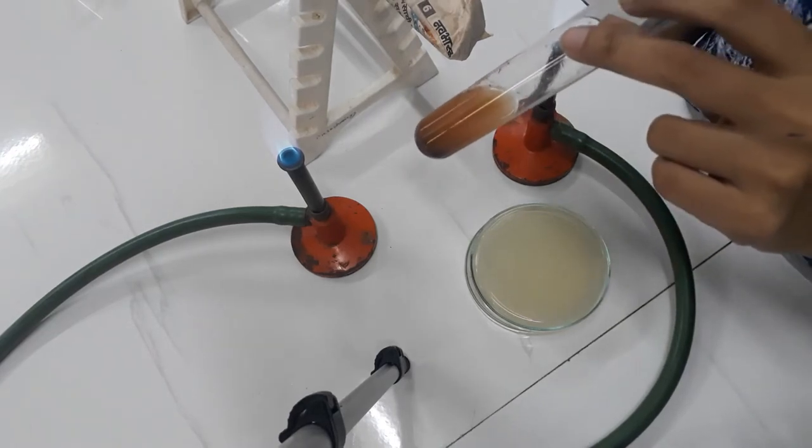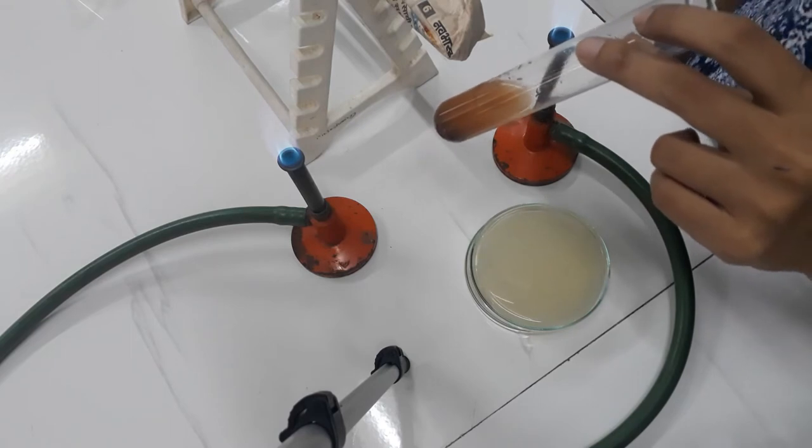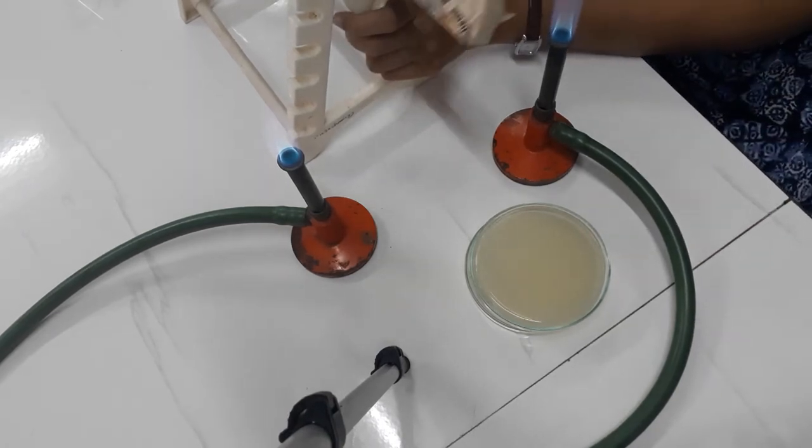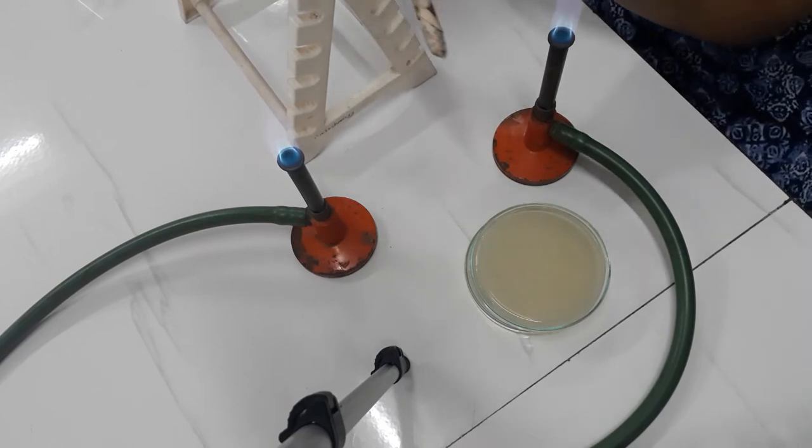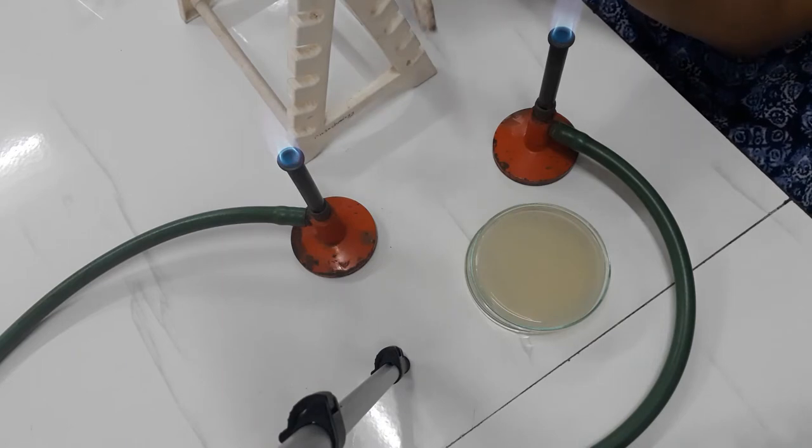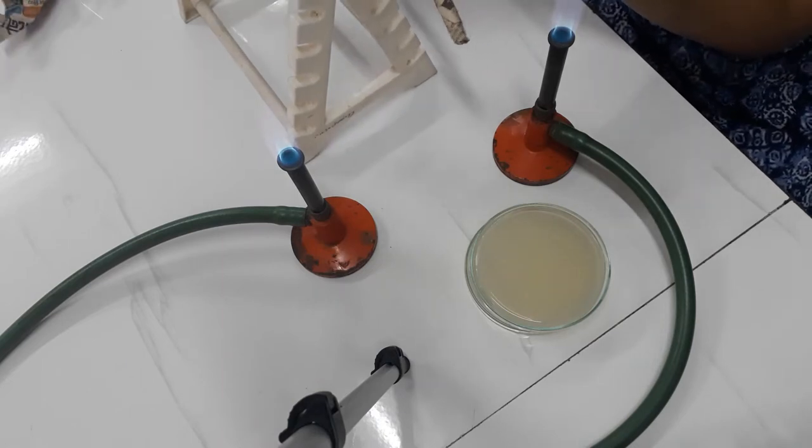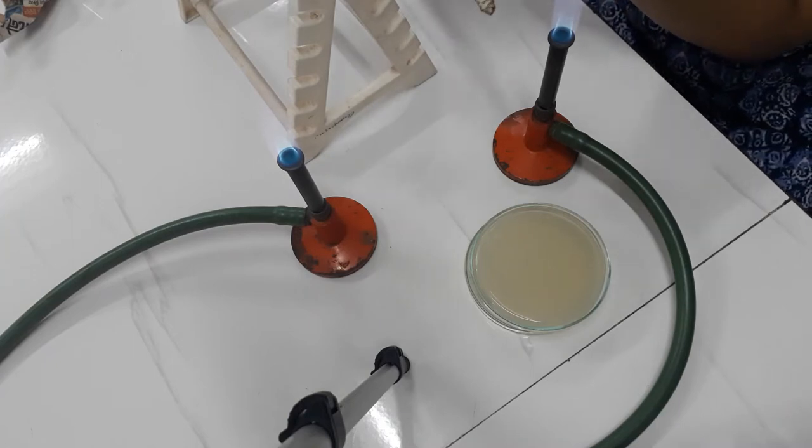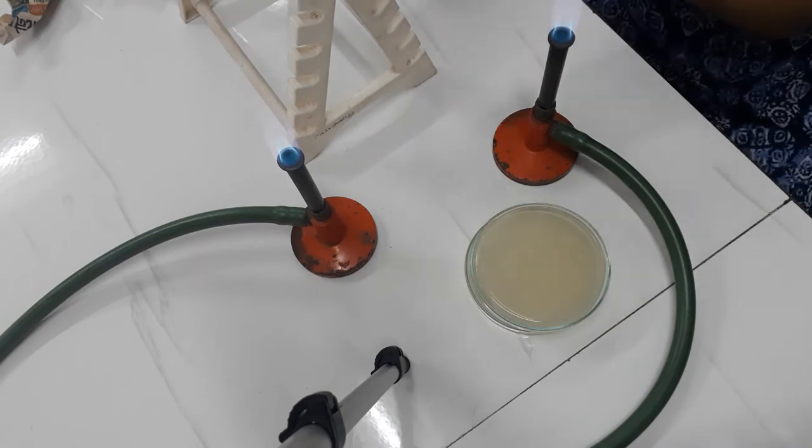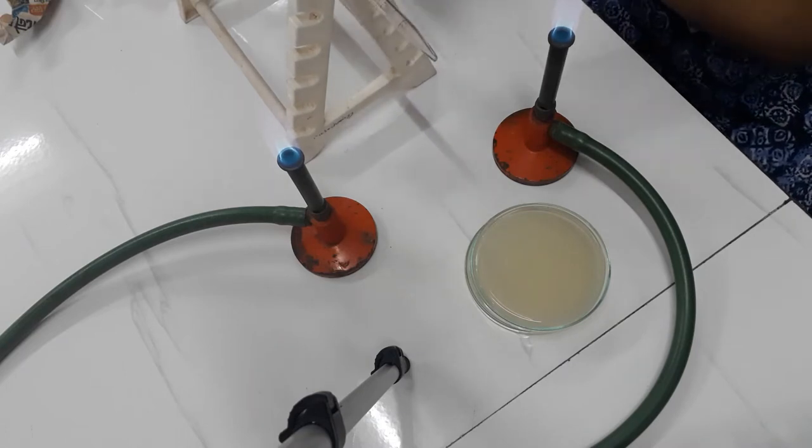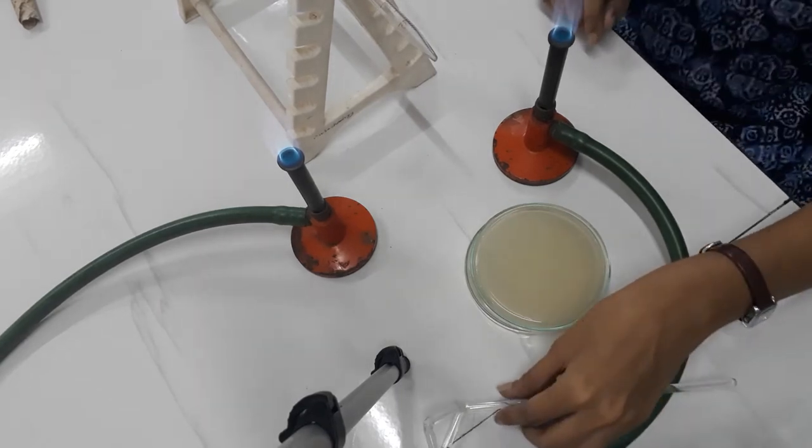Now the next step is doing a spread plate using 1 ml of the sample. So now we will be doing the spread plate technique where the first step is taking out the sterile pipette. We will open this in between the burners so the sterility of the pipette will be maintained. And the pipette tip has to be kept within the burners.